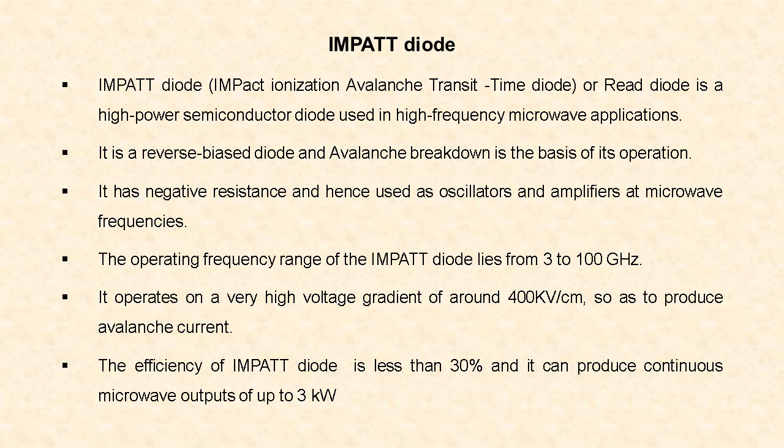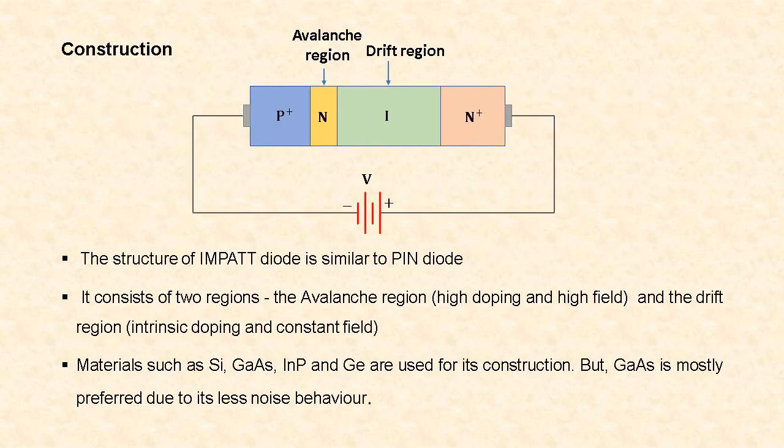The IMPATT diode is a reverse bias diode and avalanche breakdown is the basis of its operation. This diode has negative resistance characteristics, and because of that it is used as oscillators and amplifiers at microwave frequencies. The operating frequency range lies from 3 to 100 GHz. It operates on a very high voltage gradient of around 400 kilovolts per centimeter to produce the avalanche current. The efficiency of the IMPATT diode is usually less than 30% and it can produce continuous microwave outputs of about 3 kilowatts.